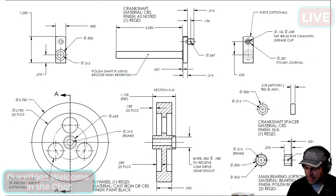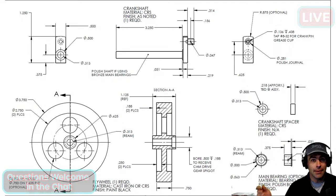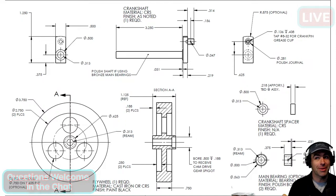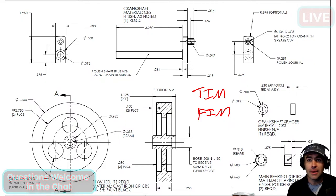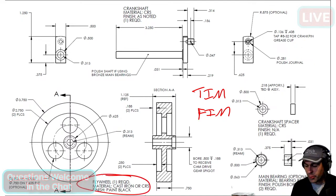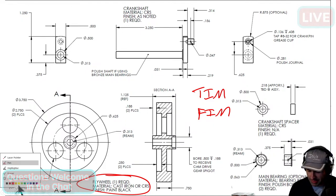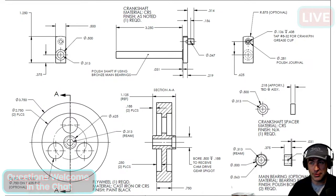Runout is also special in that it was like the first geometric tolerance — people were already doing it. When you make something on a lathe, you check it for trueness before you spool it up. Lathes have been around since the Middle Ages. On old-timey drawings you might see TIM for total indicator movement, or FIM for full indicator movement. So this is a little flywheel for a little steam engine, and I wouldn't be surprised to see it on this drawing somewhere.